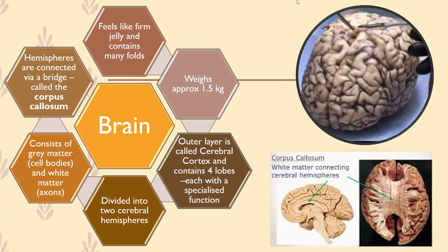When we think about the texture or structure of the brain, it does feel a little bit like firm jelly. It contains many folds, and the reason it contains many folds is to increase the surface area. Basically, if the brain were completely spread out, it wouldn't be able to fit in your head because it would be way too big. So in order to reduce its size but keep all those neural connections, it is convoluted.